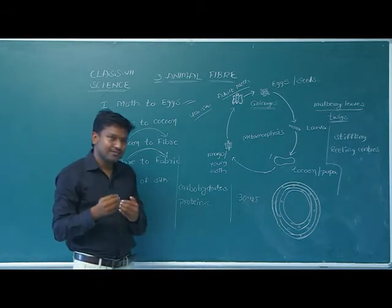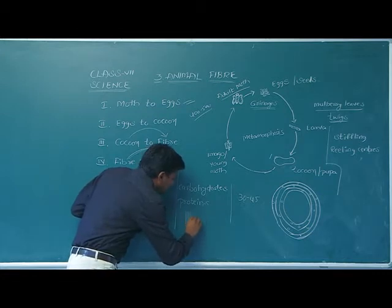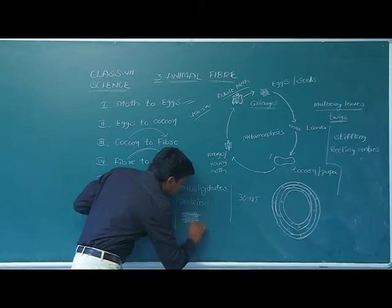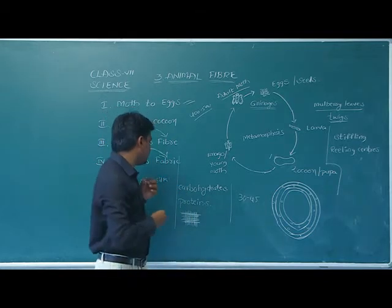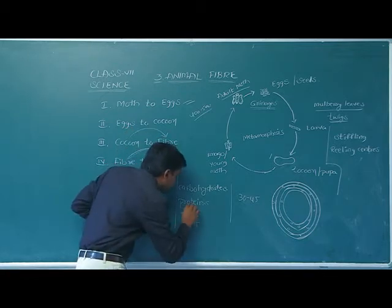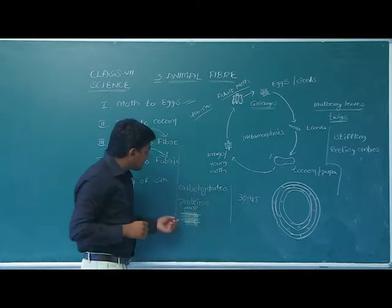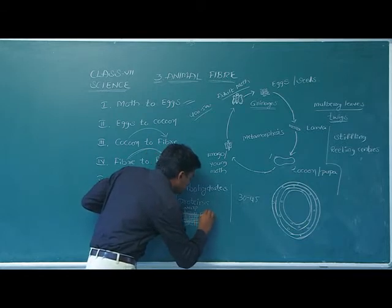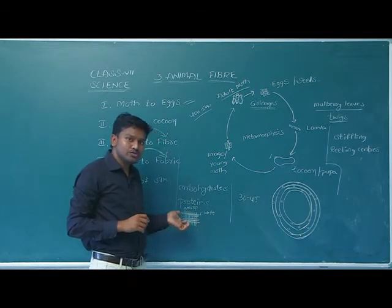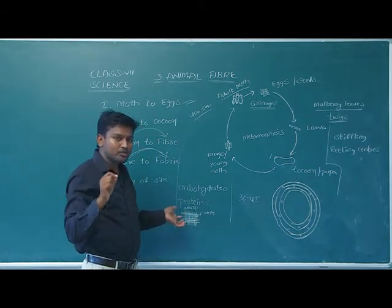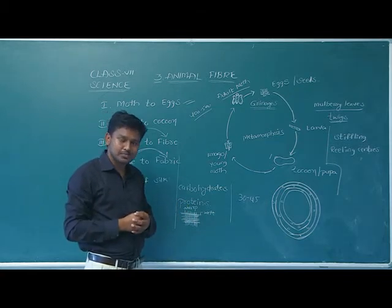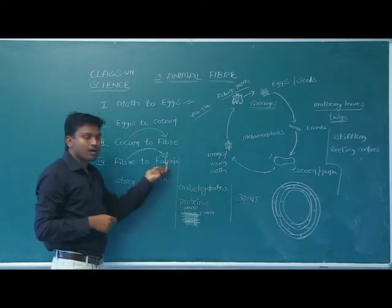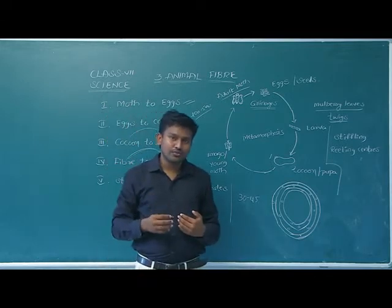The fibers are woven in a horizontal and vertical manner using power looms and hand looms. If you observe your cloth carefully, you can see the horizontal and vertical structures. The vertical arrangement of the fiber is called warp and the horizontal arrangement is called weft. Hand looms require manpower, while power looms run on electricity — they are less labor-intensive but more expensive. After weaving, the fabric is ready and can be made into different varieties and colors.